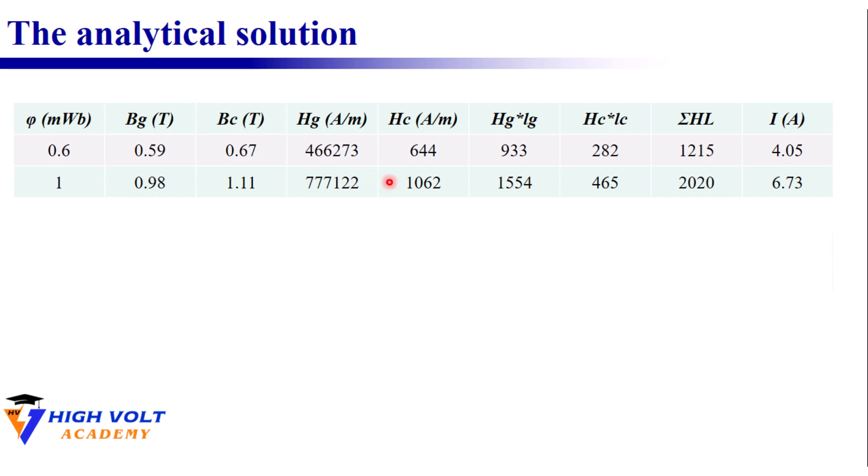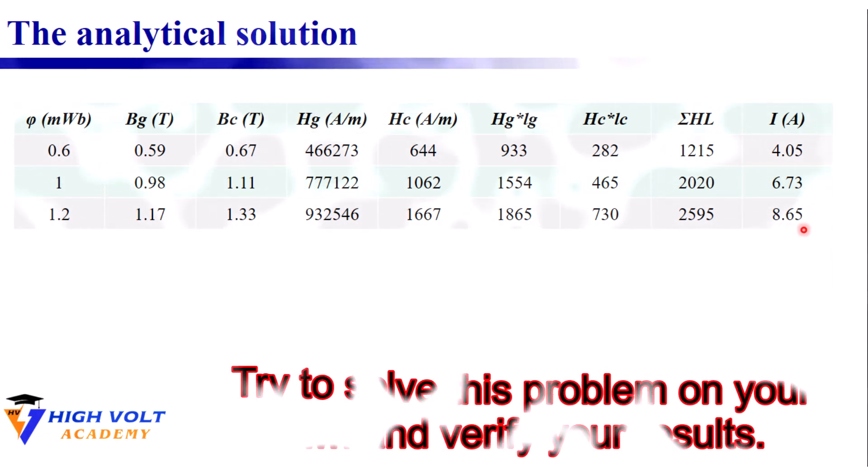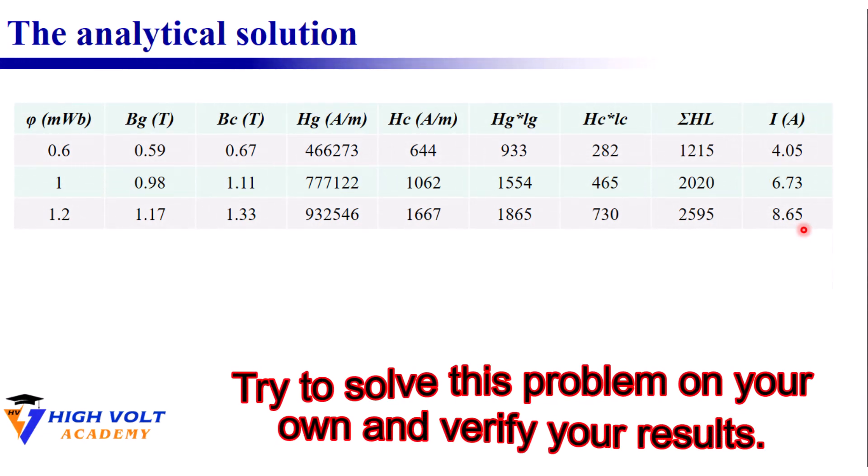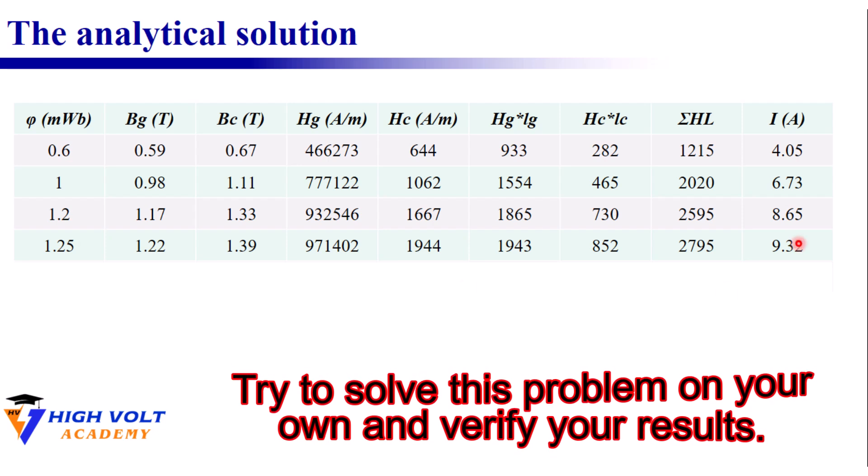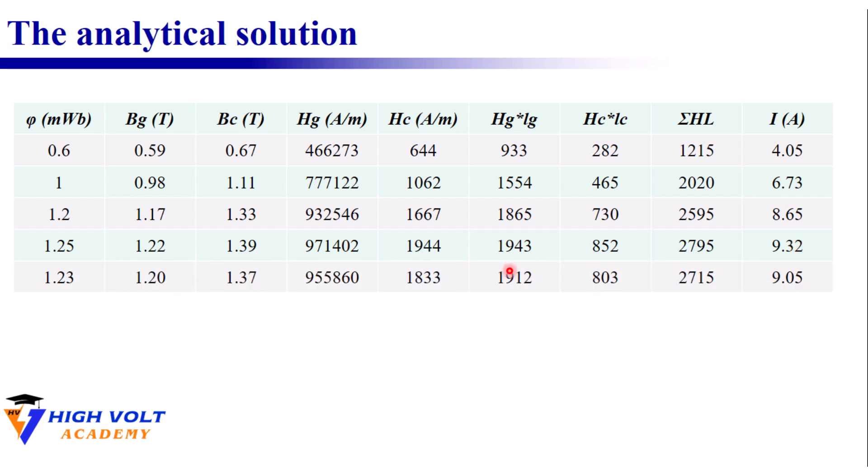I then increased the flux to 1 milliweber, repeated the steps, and got 6.7 ampere. Still not enough. Next I tried 1.2 milliweber which produced 8.65 ampere. Now we're getting closer. With 1.25 milliweber the result was 9.3 ampere, slightly high, so I fine-tuned it to 1.23 milliweber which yielded 9.05 ampere.